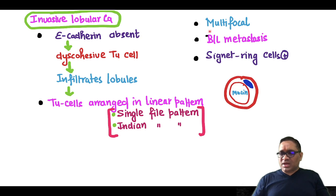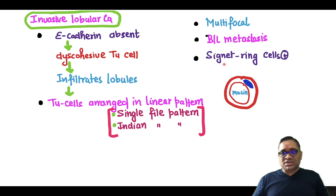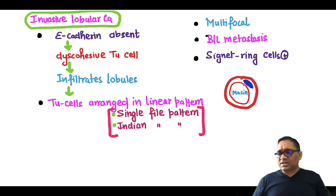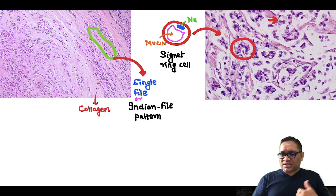These tumors are multifocal and have bilateral metastasis. They also show characteristic signet ring cells because the nucleus is pushed to the periphery by the mucin inside the tumor cell — that is why these are called signet ring cells, as they look like a signet ring. In this tumor, you can see this is the microscopy.